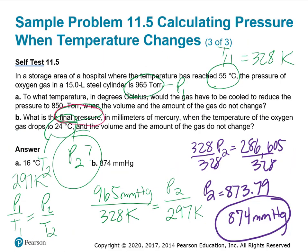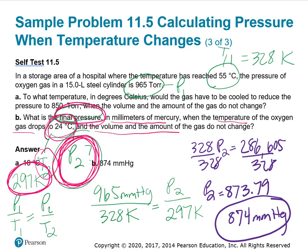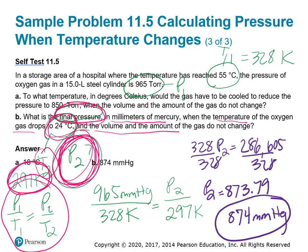Let's look at letter B. What is the final pressure, so finding P2 in millimeters of mercury when the temperature of the oxygen gas drops to 24 degrees Celsius? So we're given T2. I added 273, so we know our temperature 2. We want to find P2, and the volume and amount haven't changed, so we're looking at pressure and temperature again. P1 over T1 equals P2 over T2. We were told the pressure in torr.